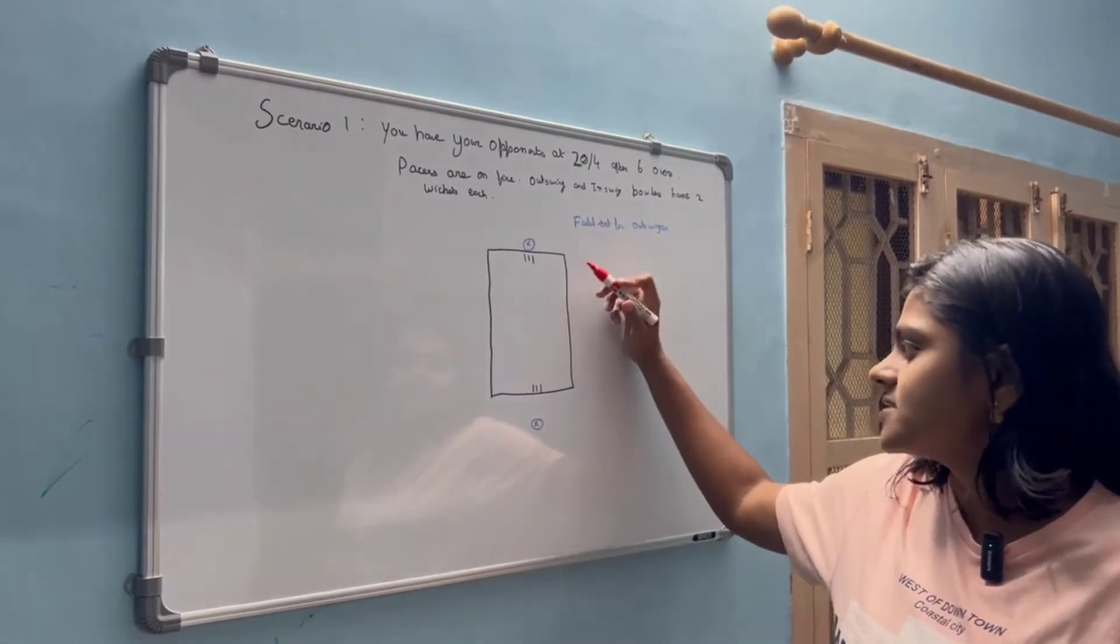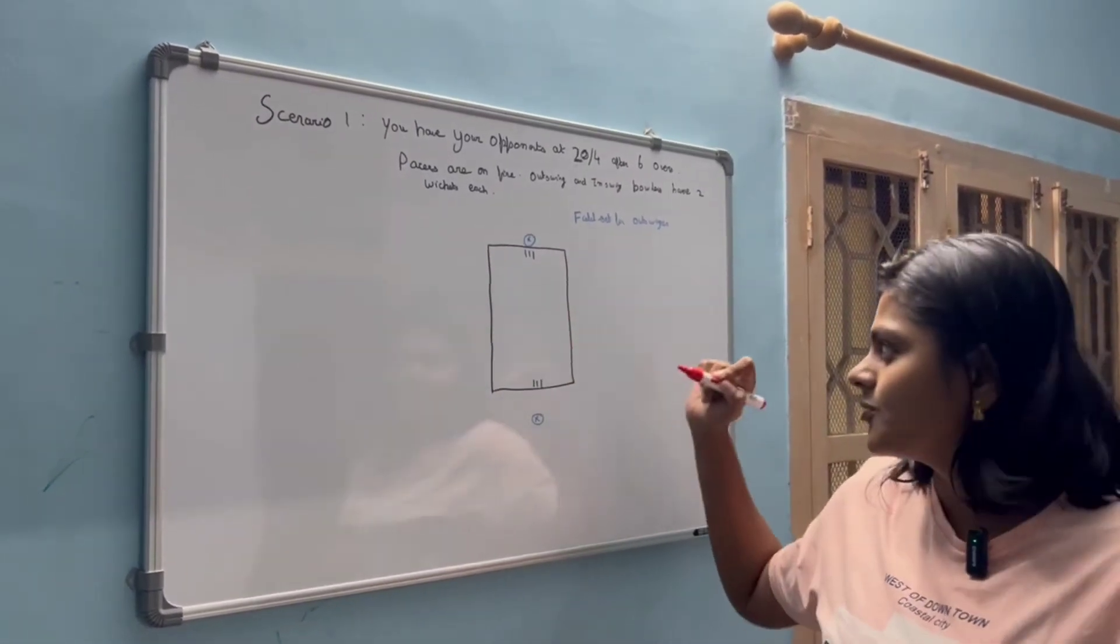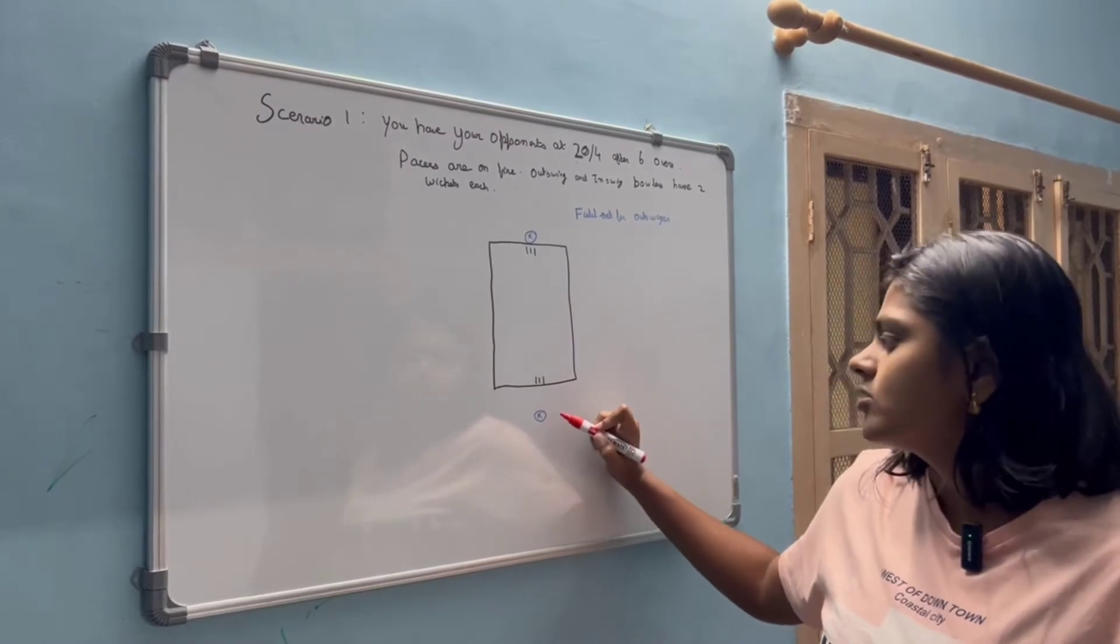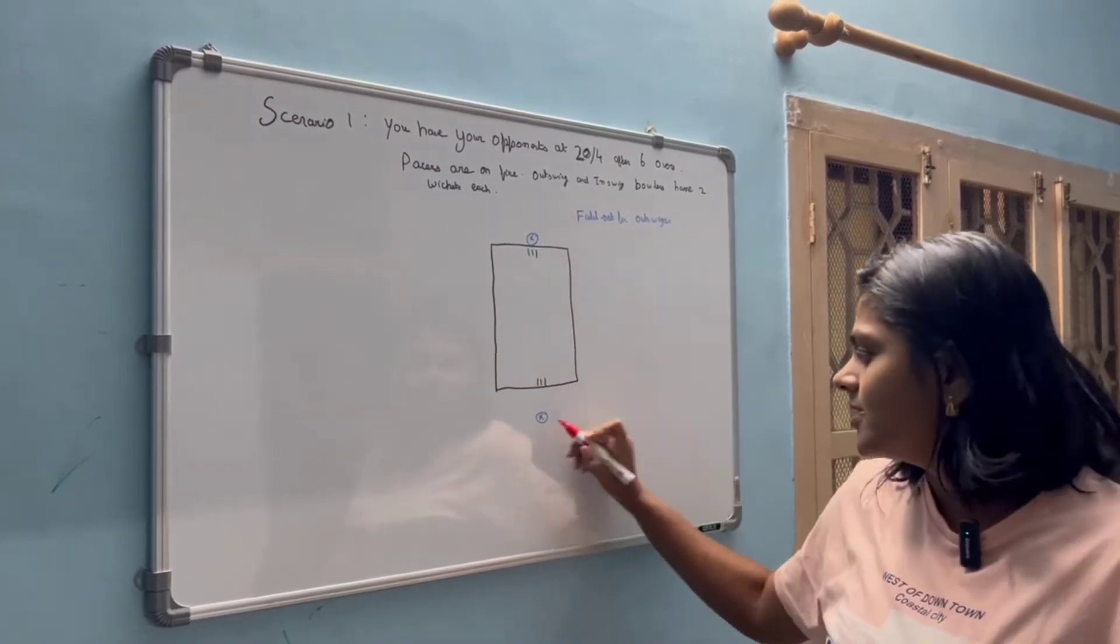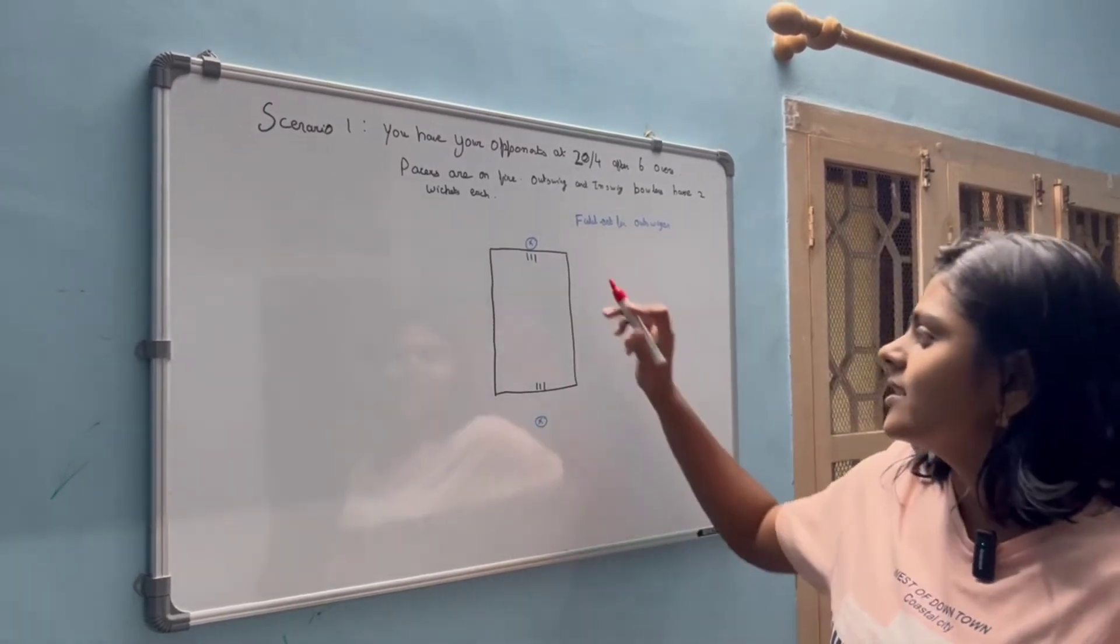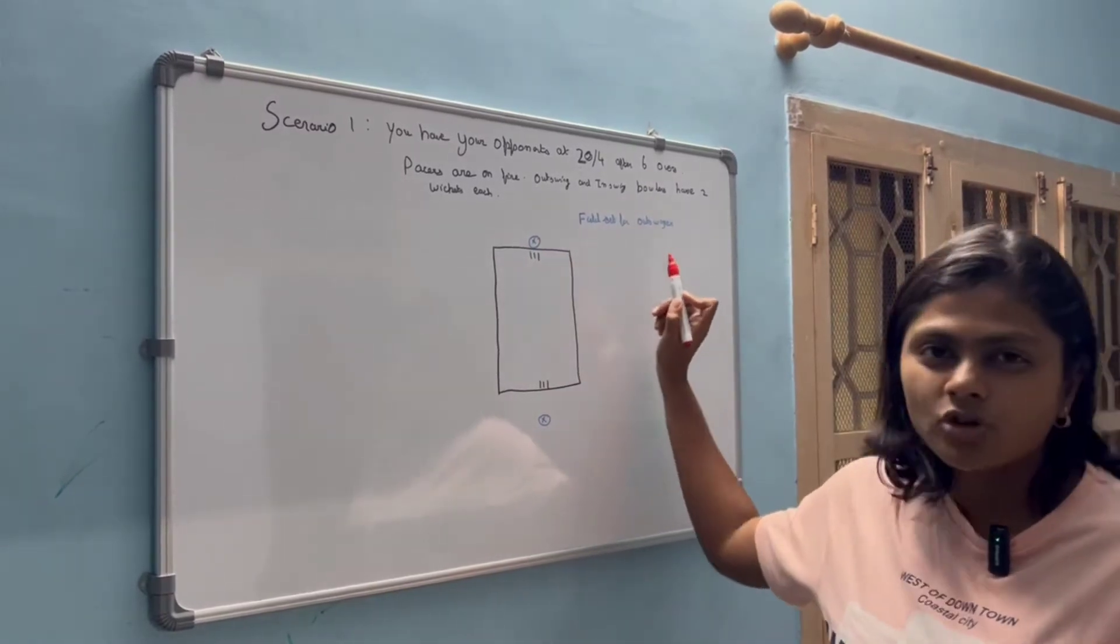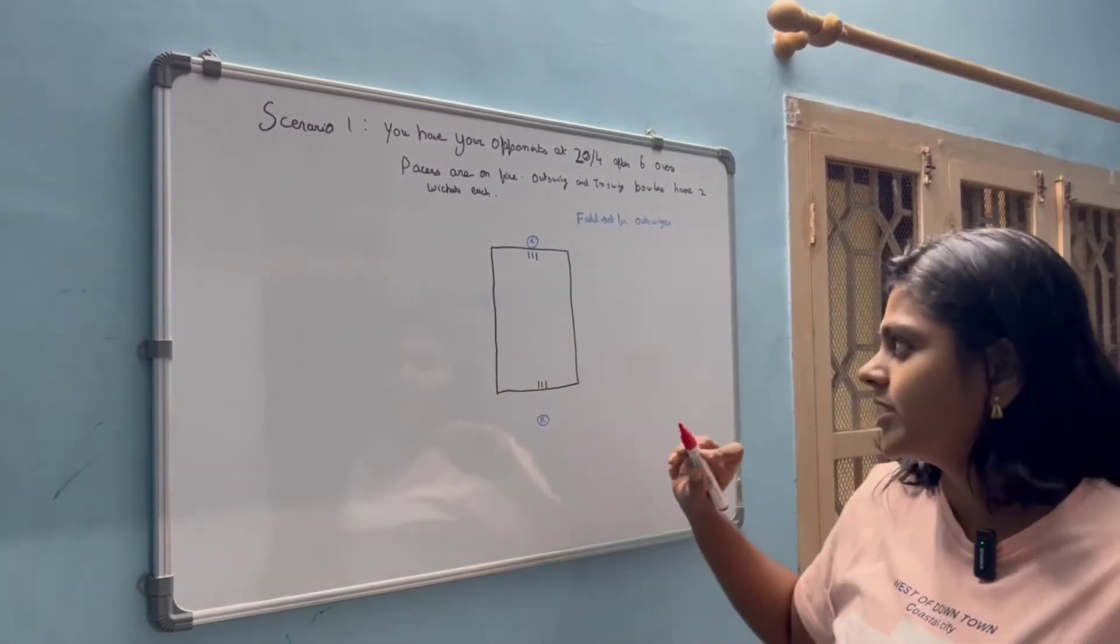Now this is just a pitch layout that I have drawn. So the ones marked in blue, this is the wicket keeper and this will be the bowler, and the first field set is for the outswing bowler who has been bowling really well.